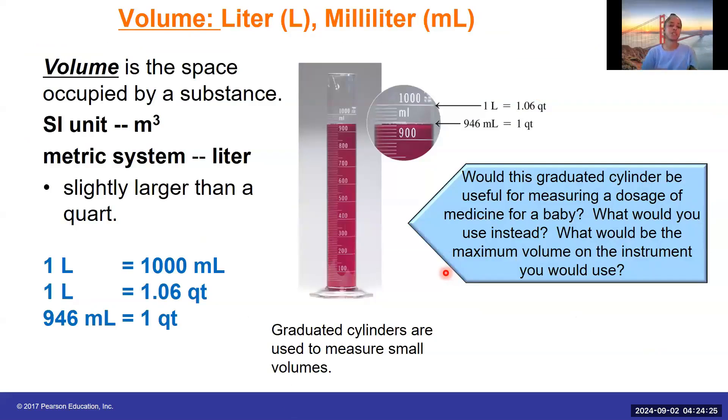Volume is measured in liters in the metric system. Milliliter is a much smaller unit than the liter. We remember that the SI unit for volume is the cubic meter. However, we will focus mainly on the liter. This is a graduated cylinder and this graduated cylinder measures 1000 milliliters. Notice that 946 milliliters is equal to one quart and 1.06 quarts is equal to one liter. All of these are conversions that we can use when converting between one unit and another. Let me ask you a question. Would you use this graduated cylinder for measuring the dosage of medicine for a baby? What do you think you might use instead? What would be the maximum volume on the instrument that you would use to measure medicine for a baby? Most likely, a medicine dropper would be a better idea to measure medicine for a baby and most often medicine droppers are generally about one milliliter.